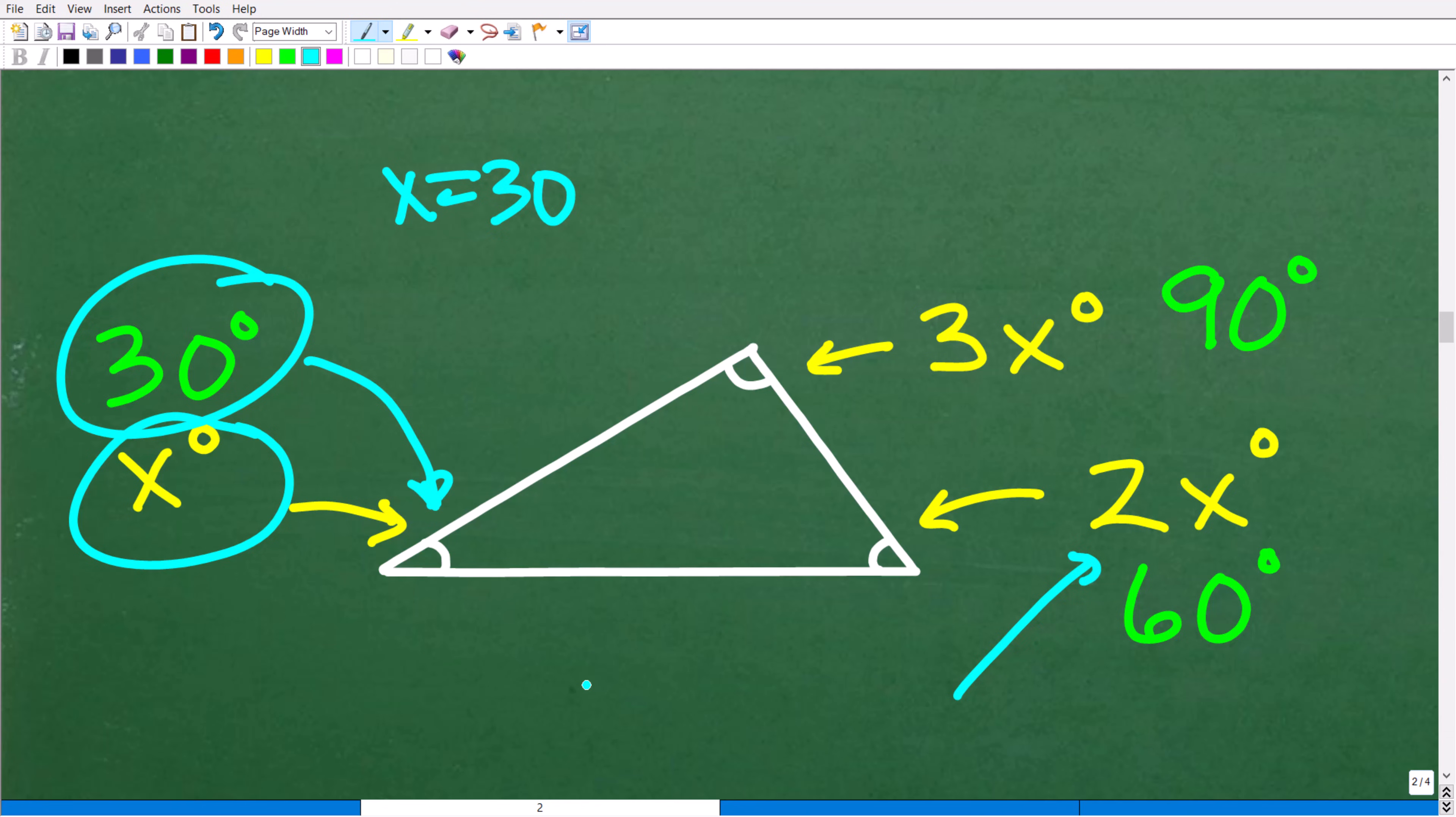So this would be 2x, or 2 times 30, which of course is 60 or 60 degrees. And over here, we have to go 3 times 30, of course x is 30, and that is 90 degrees. So a lot of students, and I've made these mistakes as well, everybody makes mistakes when you're learning, but to be successful in math, you have to stay focused.